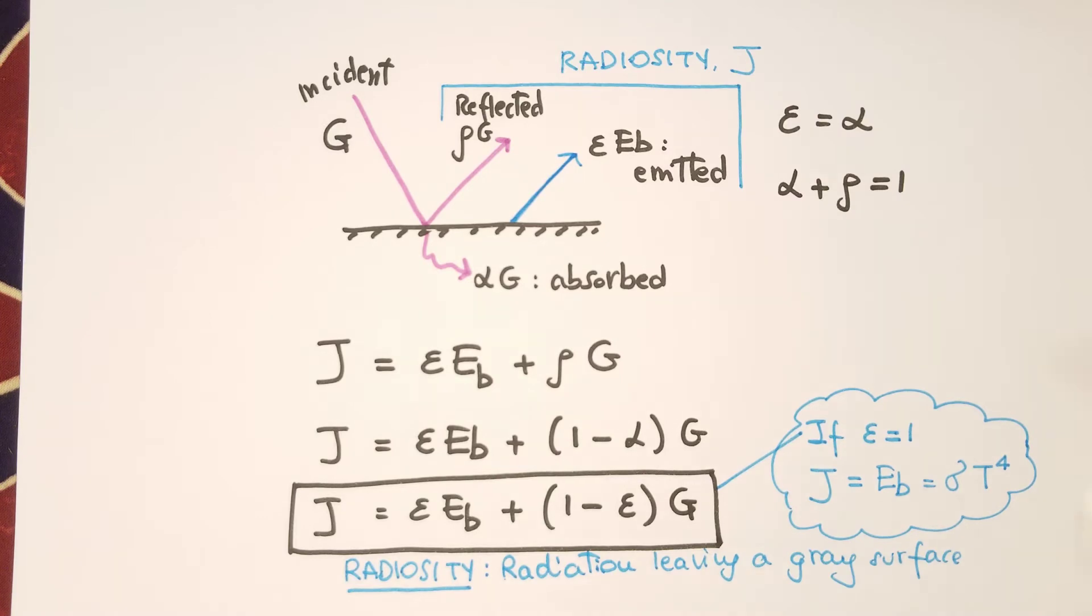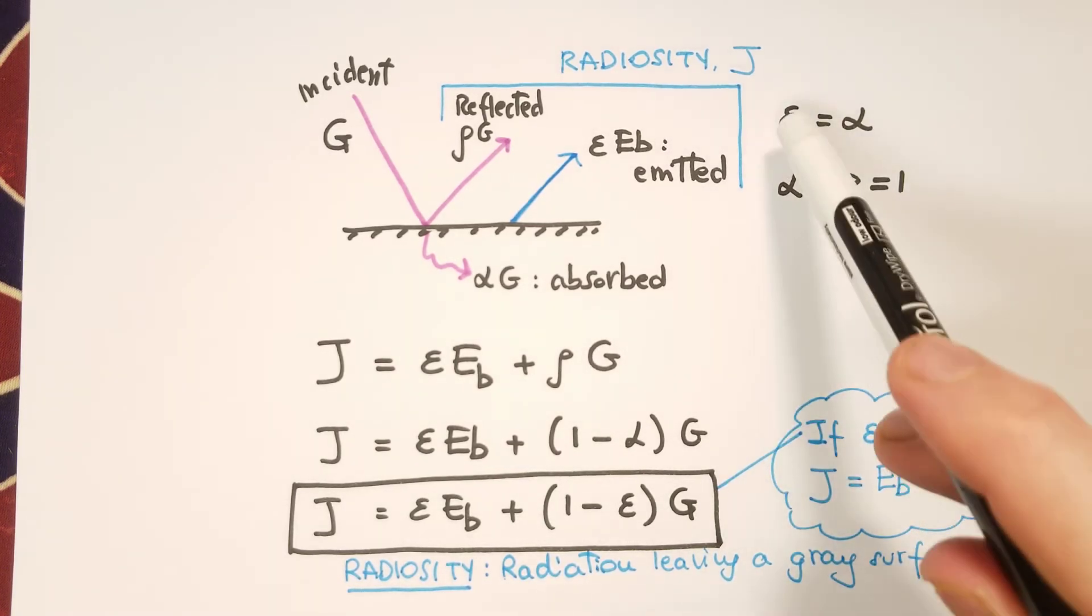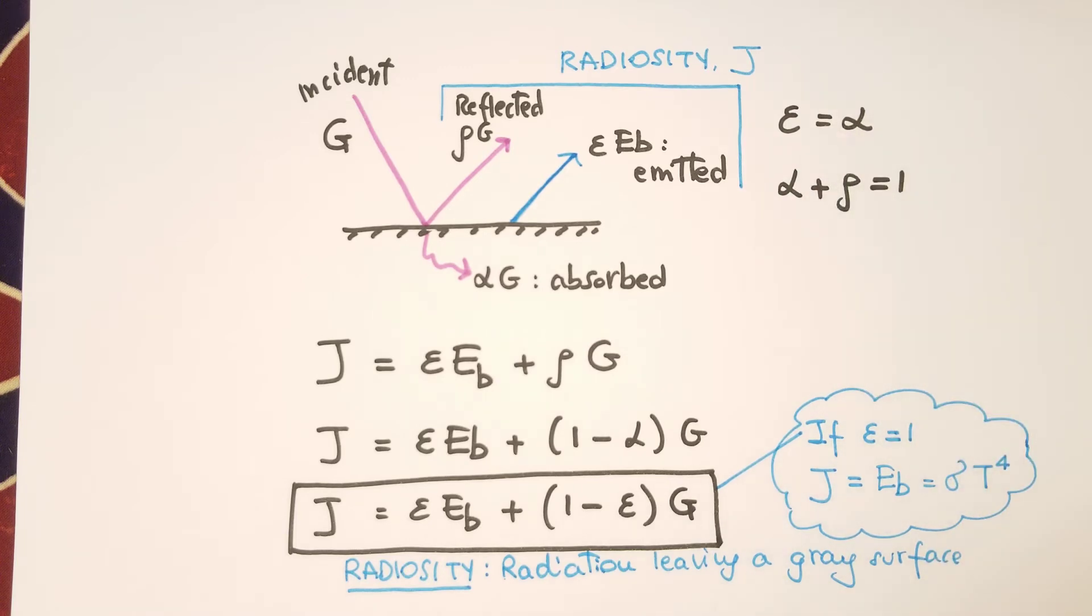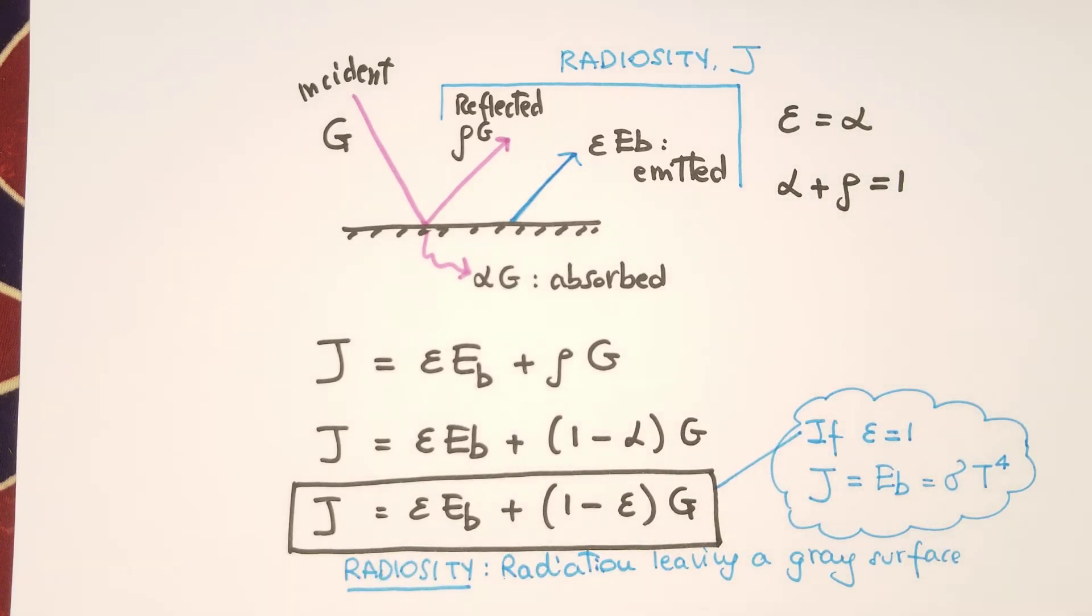And two important relationships we can use now are Kirchhoff's law, so ε equals α. So the emissivity is equal to the absorptivity. And also, we don't have any transmissivity, so the absorptivity plus the reflectivity is equal to 1, because of conservation of energy. So the radiosity, the sum between the emitted power and the reflected power, εEb plus ρG, can be written in this way. Instead of ρ, we write 1 minus α, but α is equal to ε. So this is the final expression we get for the radiosity.